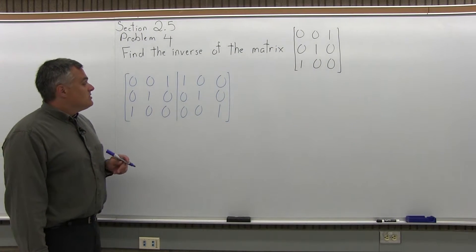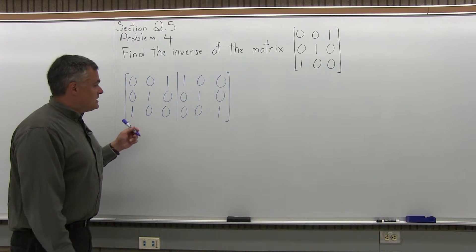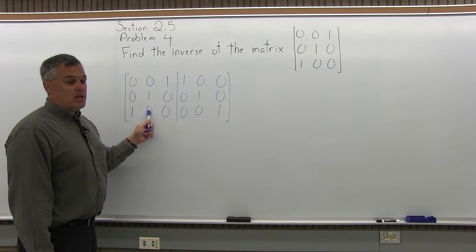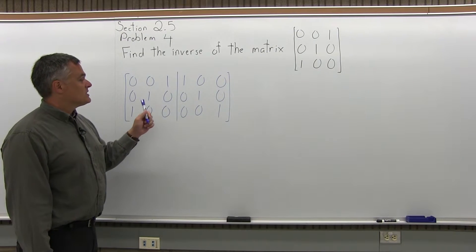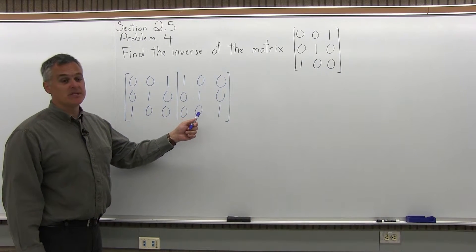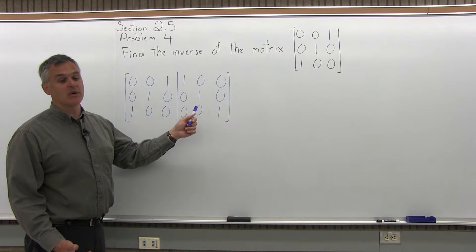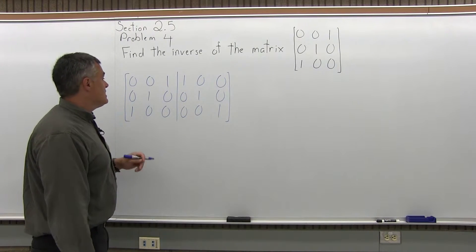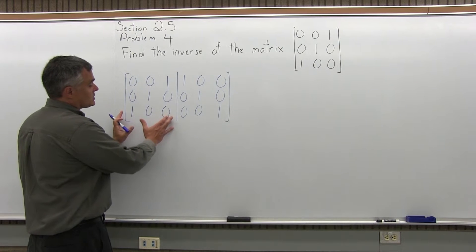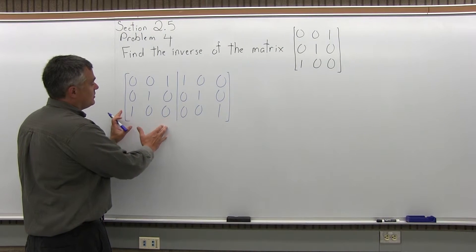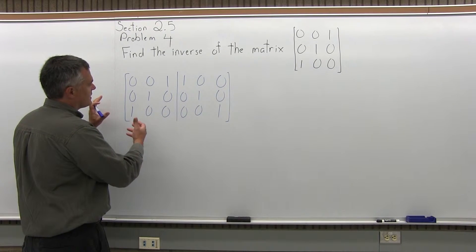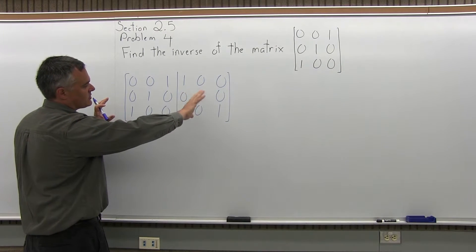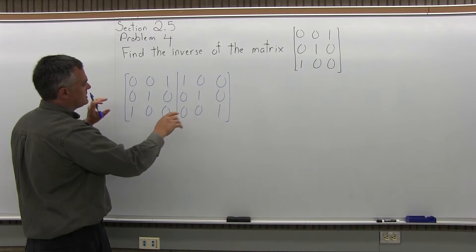Now, what we have to do is do whatever steps we need to to solve the left half matrix to turn it into an identity matrix. And what's going to happen is, as we apply those steps, the matrix on the right half of the double matrix will turn into the inverse. Well, in this particular case, when we concentrate on the matrix on the left half, and you think of where the 1s and 0s have to go, don't pay attention to the right half matrix initially. We'll just see what it turns into.